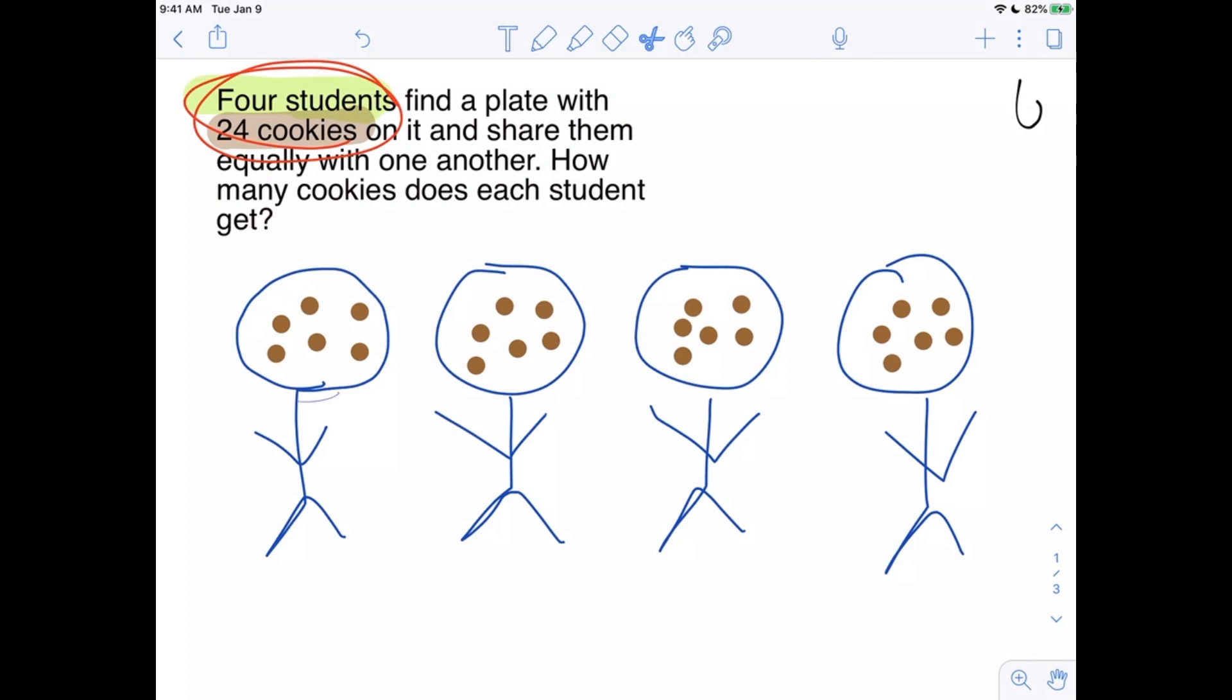How do we know that each student gets six cookies? Because I can see that there's six cookies for this student, six cookies for this student, etc.